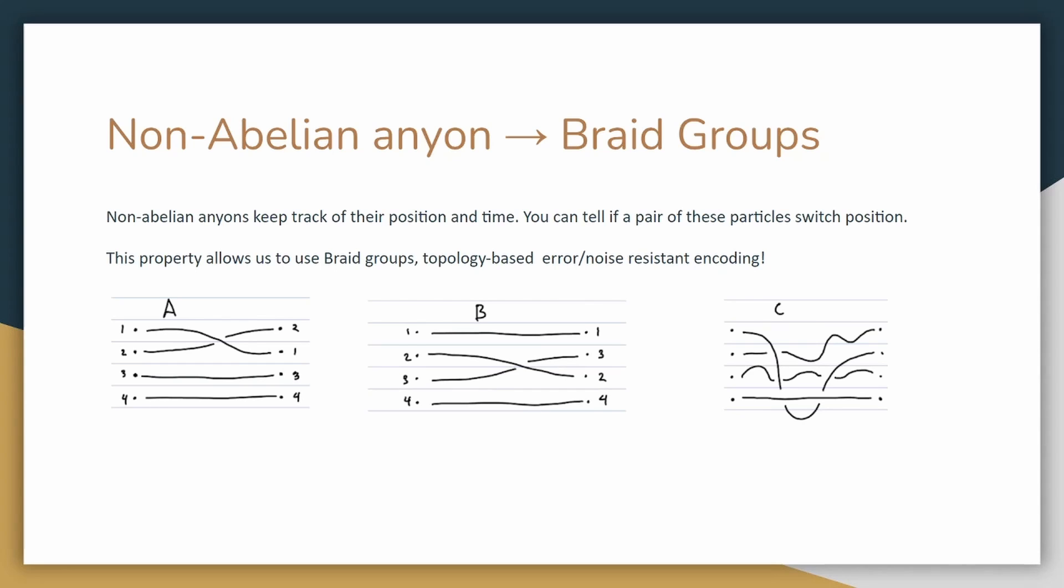You can go ahead, pause the video, get some string and try it for yourself. This tolerance to local errors allows for error-tolerant encoding of quantum information.